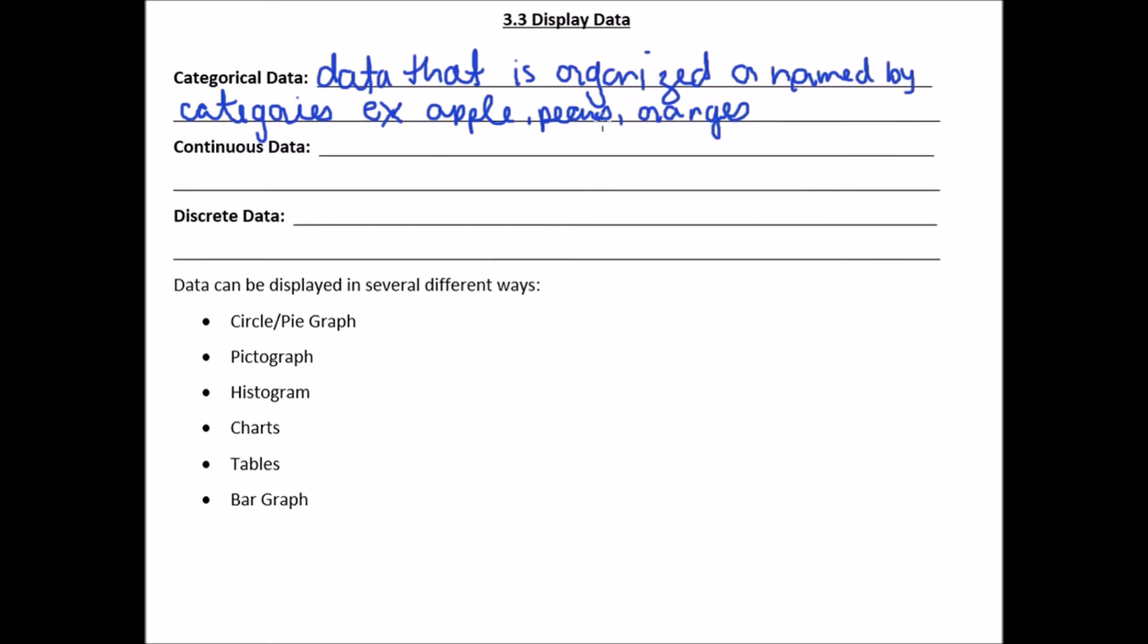Okay. So as you can see here, apple is not a number. It's a category or pears or oranges. These are three categories.